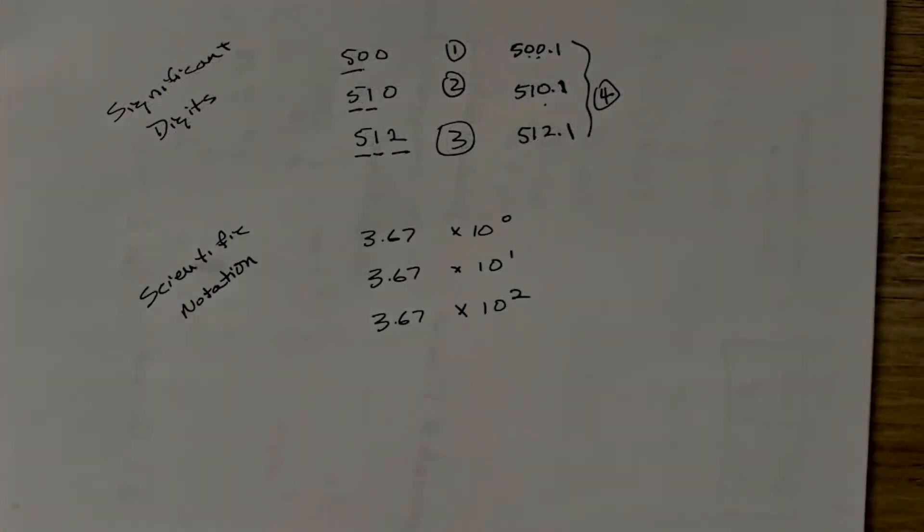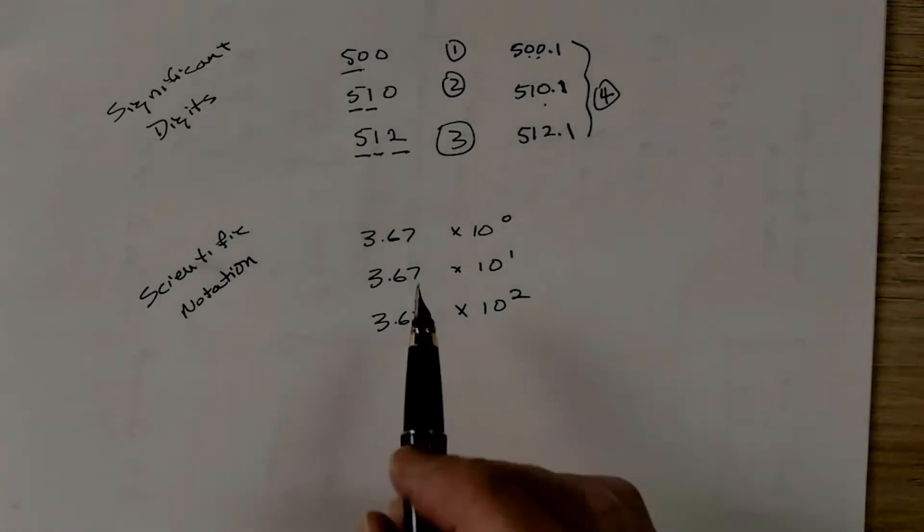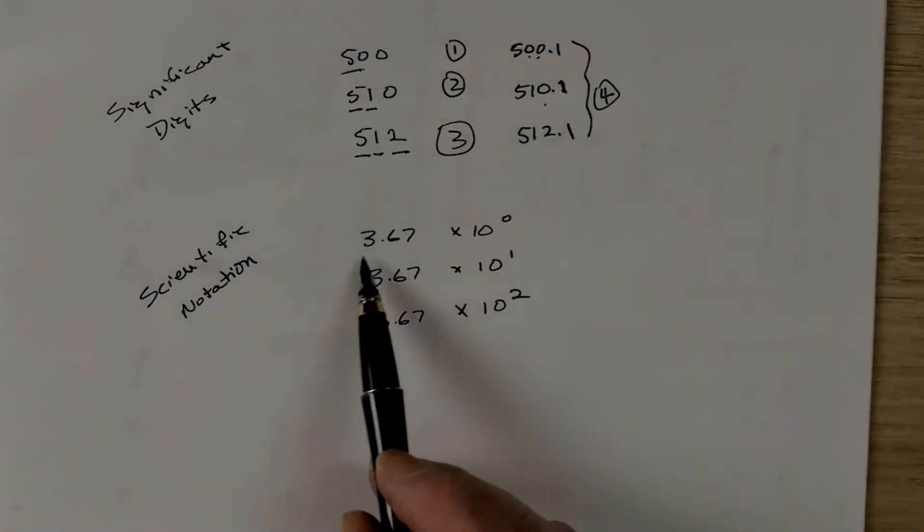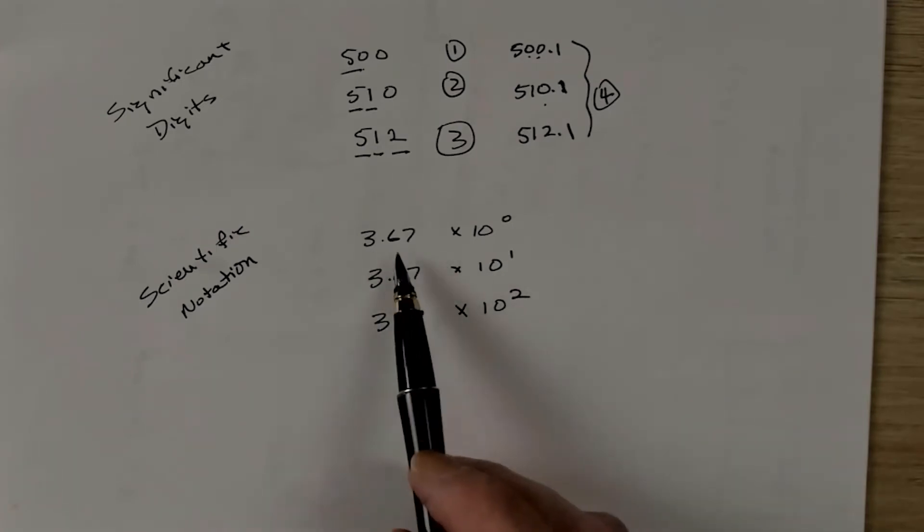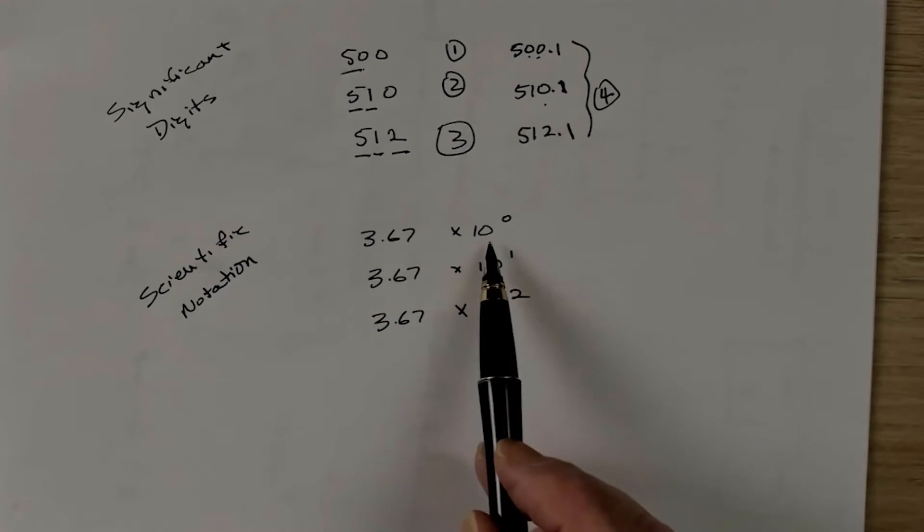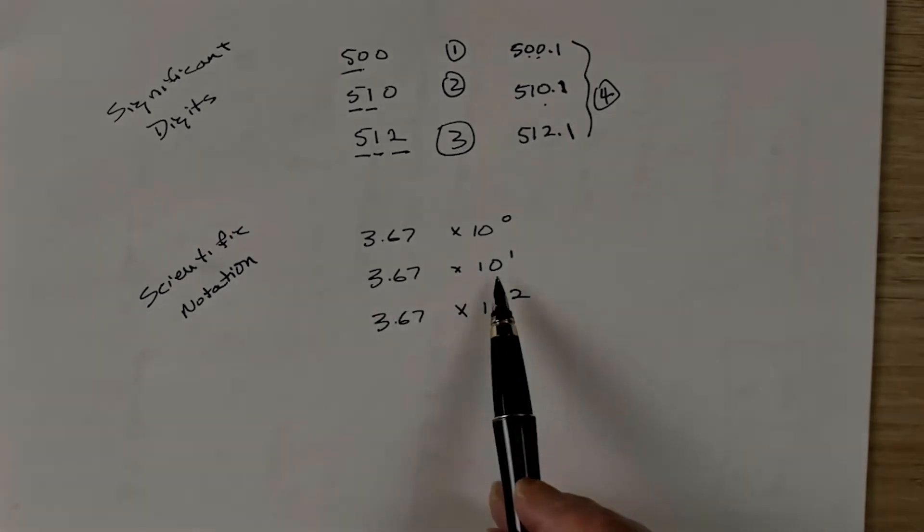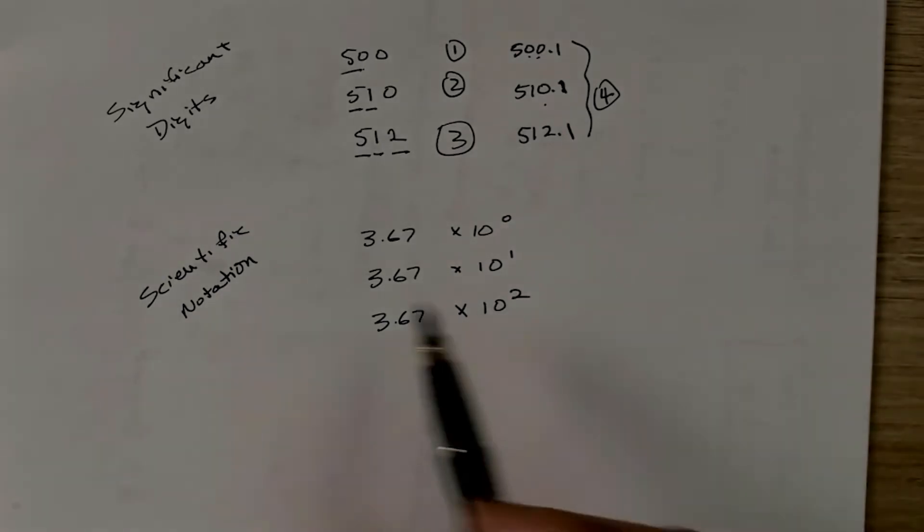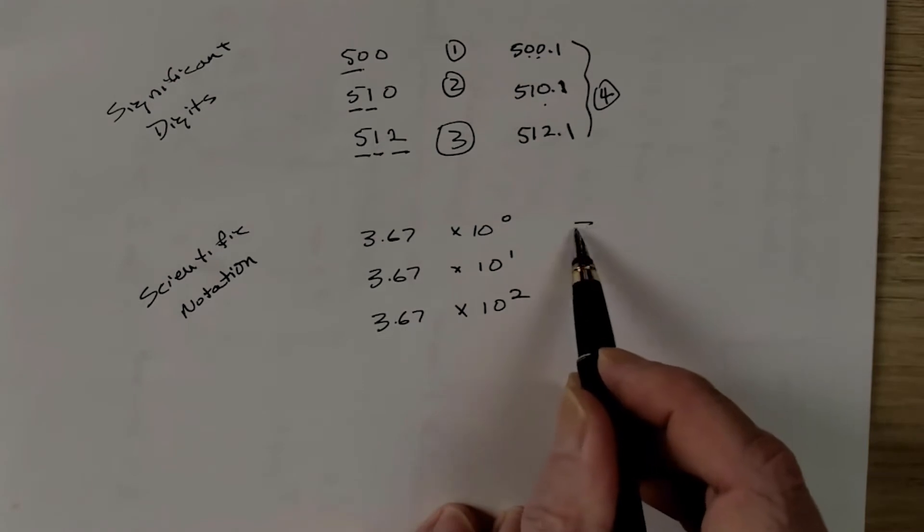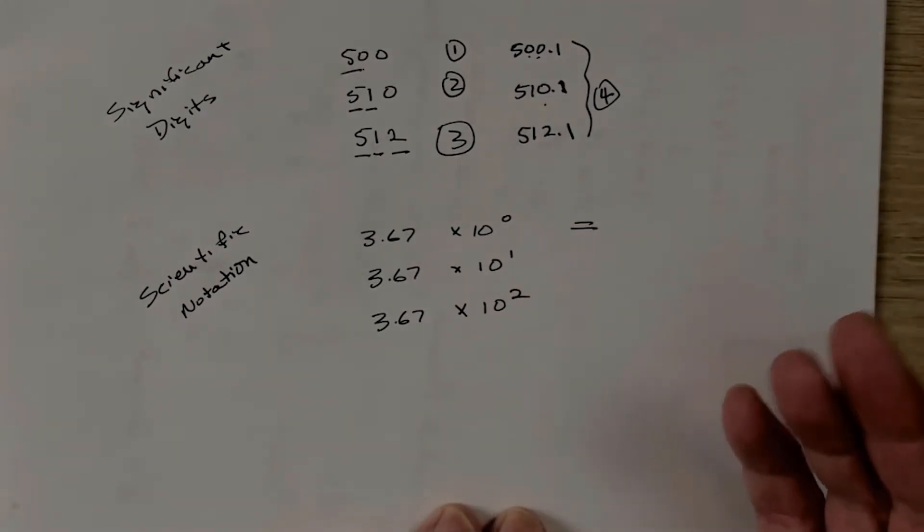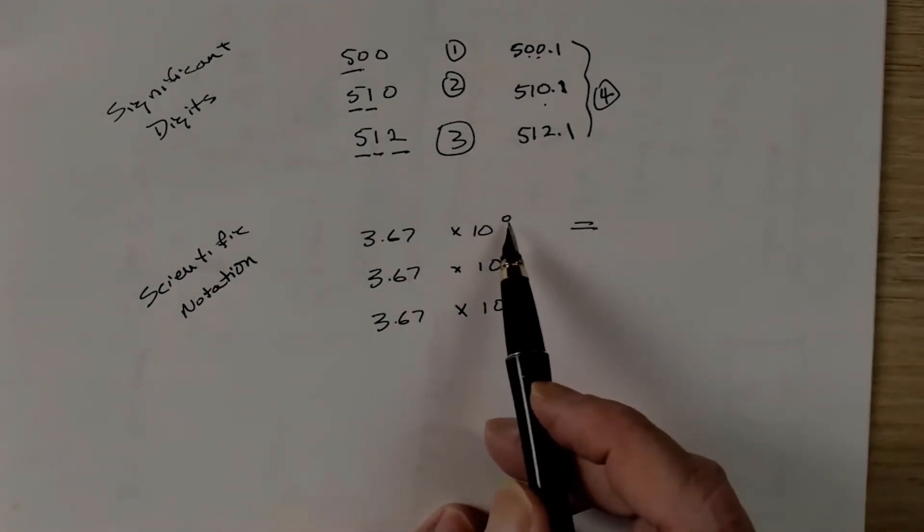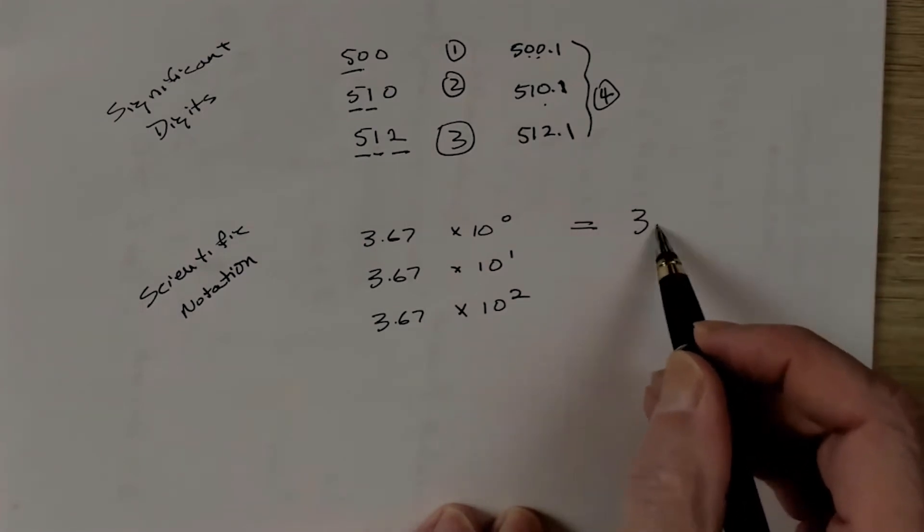Next, we have something called scientific notation, which makes big numbers into small ones. So say we have three numbers, and we express them all as 3.67. However, one is 3.67 times 10 to the 0. The next is 3.67 times 10 to the 1. And finally, we have 3.67 times 10 to the 2. Now what do these numbers mean? Well, 10 to the 0, or any number to the 0, means that you multiply it by 1. So that equals 3.67.